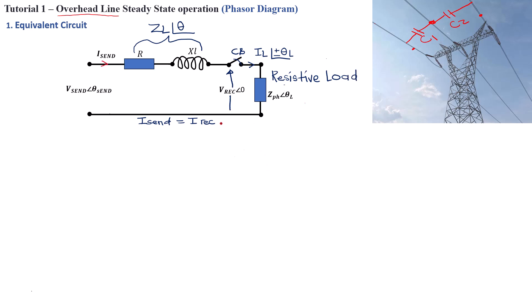Before proceeding with the phasor diagram, there are two important elements we need to address: the voltage drops across the transmission line. We have R and XL, so we know the voltage drop across the resistance will be VR. Across XL, we're also going to have a voltage drop VL, which will have a 90 degree angle, while VR will have a zero degree angle. Together, this combination is basically VZ — the total voltage drop across the transmission line, equal to VR plus VL — with an angle we can calculate.